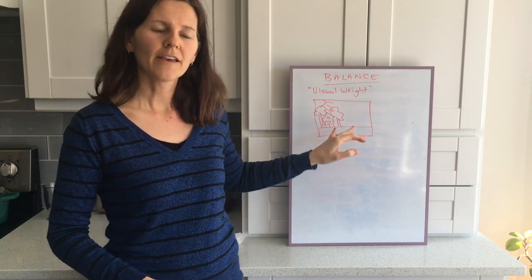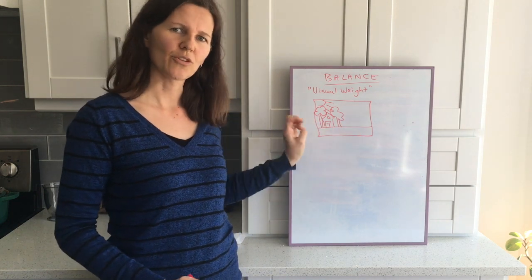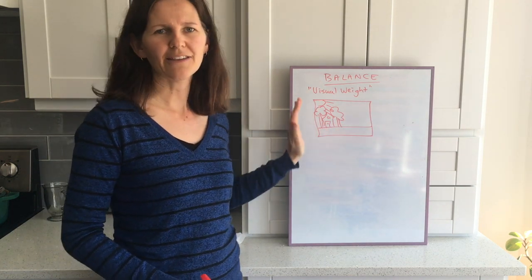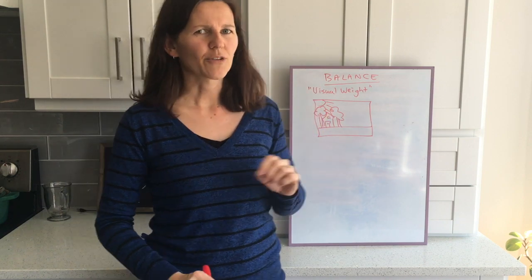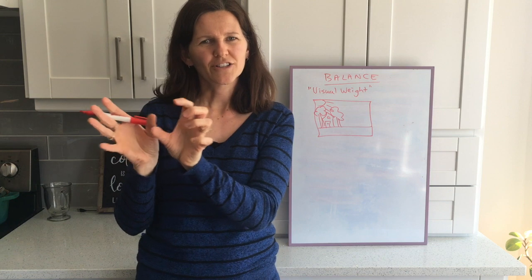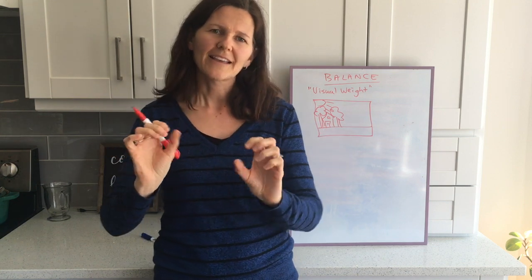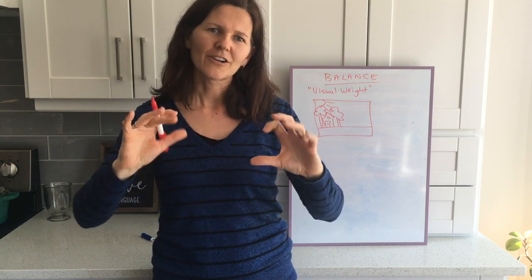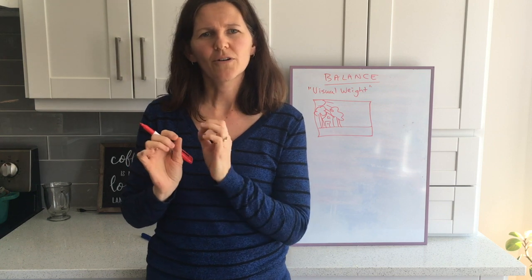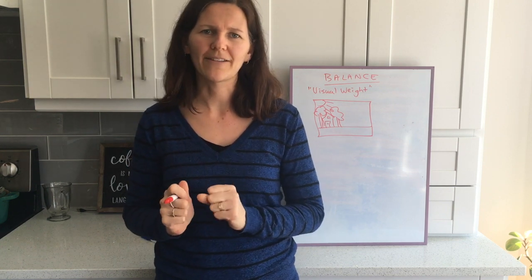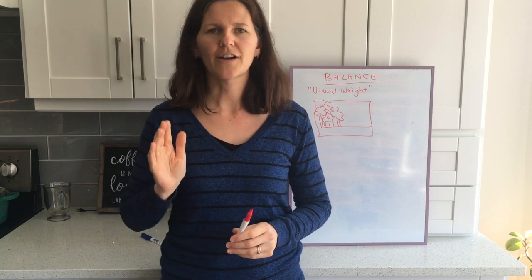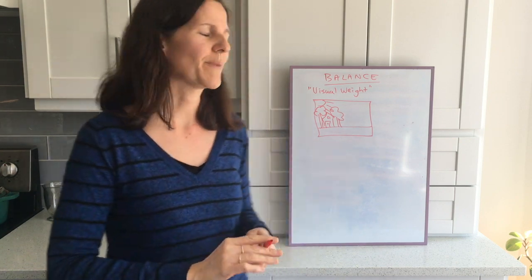Our eyes actually crave balance - they want to see the weight evenly distributed. That's why, like, if your mom sets up something on the mantle and fiddles around with it a bit, it's because her eye is craving balance. We all have that sense, so we all kind of know when things are balanced and when they're not. Trust your eye, because it will tell you when you've achieved balance.